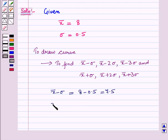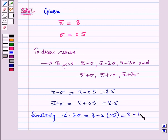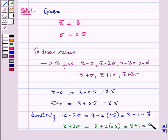Then x-bar plus sigma equals 8 plus 0.5, which equals 8.5. Similarly, x-bar minus 2 sigma equals 8 minus 2 times 0.5, which equals 8 minus 1, that is 7. And x-bar plus 2 sigma equals 8 plus 2 times 0.5, which equals 8 plus 1, that is 9.